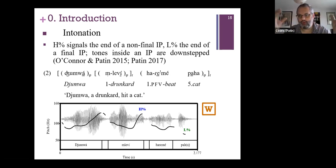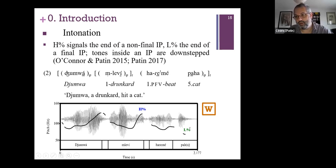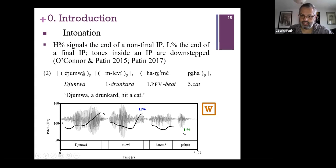On intonation: there are of course several prosodic groups. What is important is that at the end of a sentence or utterance, you will have final lowering because of a low boundary tone. You can also have a high boundary tone when it's a non-final intonational phrase, but that won't be relevant for today.